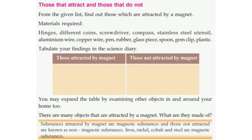What is attracted by the magnet? You can use the magnet with a safety pin, coin, and screwdriver. Hinges, iron, nickel, and coins are attracted. Aluminium, copper, paper, pen, rubber, glass, and plastic are not attracted by the magnet.